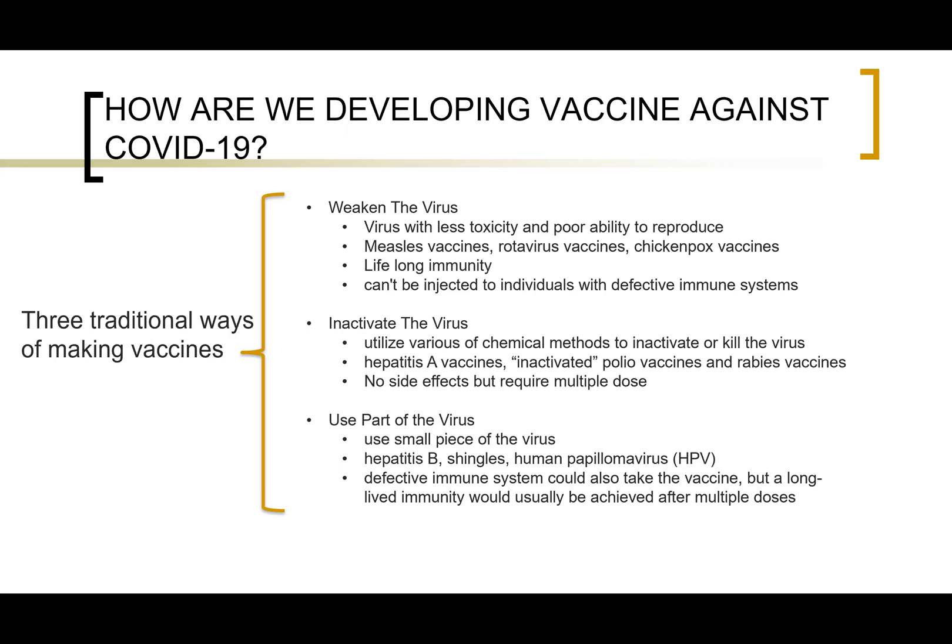Weakened vaccines provide lifelong immunity, but they cannot be given to individuals with defective immune systems, since their weakened immune system is unable to protect the host even from those weakened viruses. The second method is inactivated virus, which uses a variety of chemical methods to inactivate or kill the virus. This dead virus cannot undergo reproduction or initiate disease. Because the virus is still present in the human body, an immune response is generated. These vaccines will not cause any type of disease, so they can be given to the entire population. However, the immune response is not lifelong, requiring multiple injections. The third method uses only part of the virus, and individuals with a defective immune system can also take this vaccine, though long-lived immunity usually requires multiple doses.